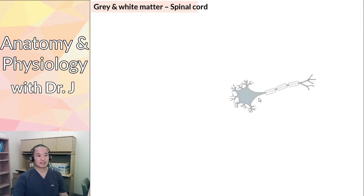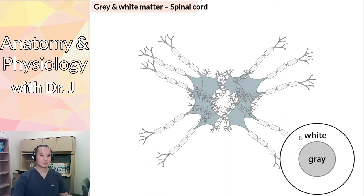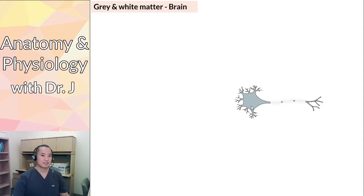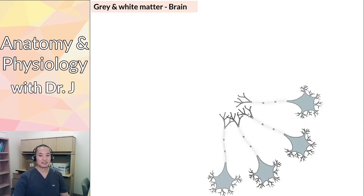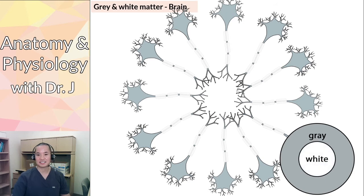In the spinal cord, we have the gray matter in the middle — the cell bodies and dendrites — arranged toward the inside, with all the white matter toward the outer edges. In a cross-section of the spinal cord, you have gray matter in the center and white matter on the outside. Whereas in the brain, it's flipped: neuronal cell bodies are on the outer surface while axons reach toward the inside. It's a flip-flop between the spinal cord and the brain — you still have neurons, but they're arranged differently.